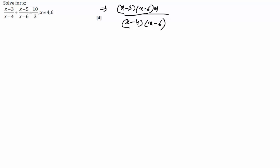into x minus 6 plus x minus 4 into x minus 5 equal to 10 by 3, where x not equal to 4 comma 6. Opening the brackets, this will be x square minus 9x plus 18 plus